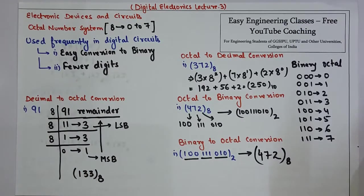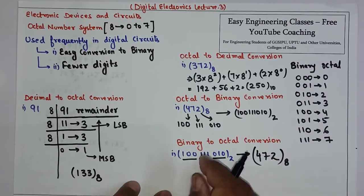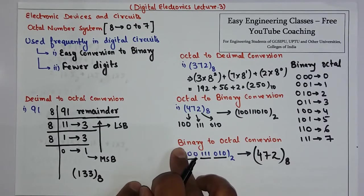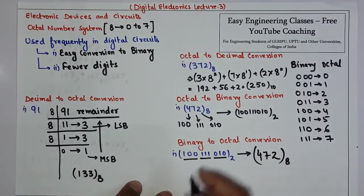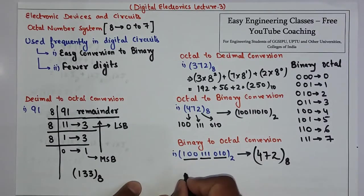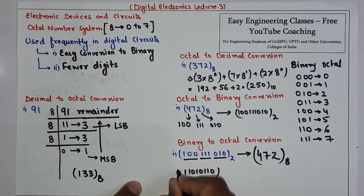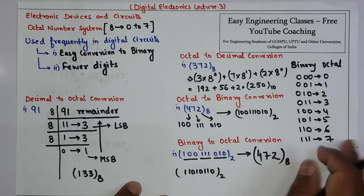Suppose we have the binary number 1 1 0 1 0 1 1 0. We group it into sets of three bits from the right.